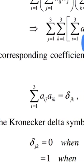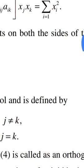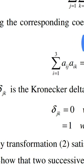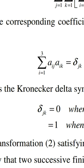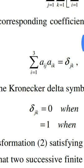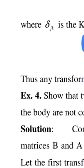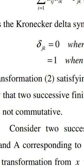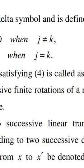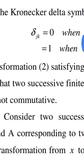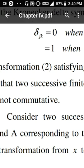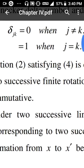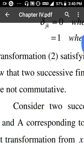Equating the corresponding coefficients on both sides of the above equation, we get: summation of a_ij * a_ik (i = 1 to 3) = delta_jk, where delta_jk is the Kronecker delta symbol, defined by: delta_jk = 0 when j ≠ k, and delta_jk = 1 when j = k.